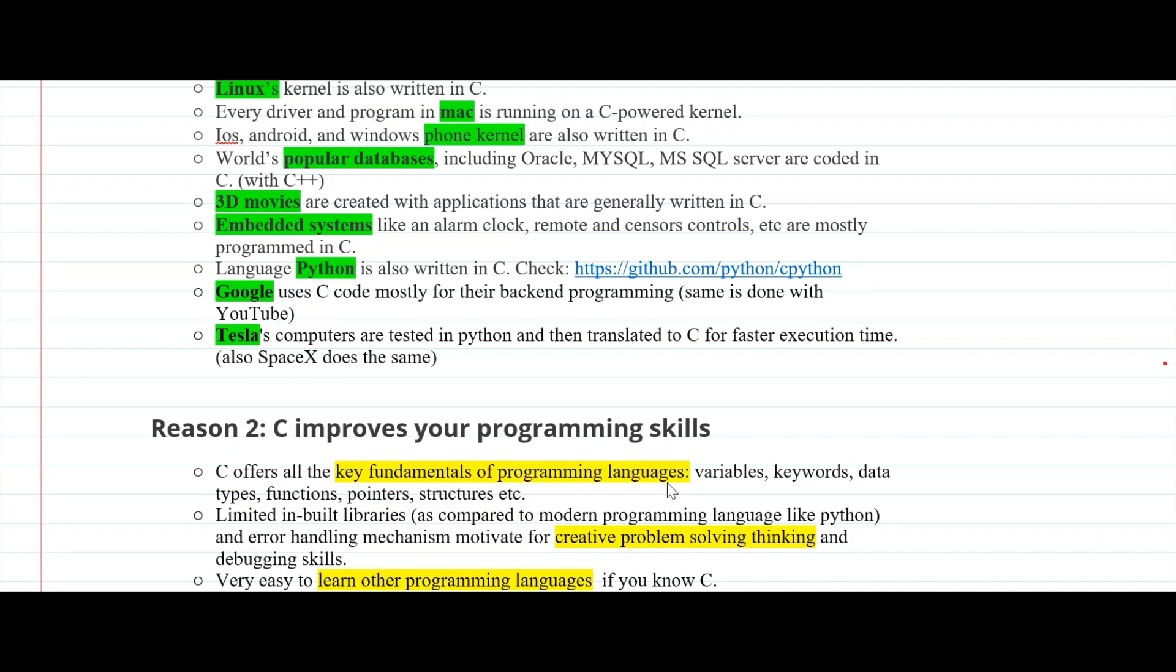Second thing is due to limited inbuilt libraries as compared to modern programming languages like Python. C has a very limited number of inbuilt libraries. But this limitation will help you because you need to think on your own in order to solve the underlying problem, and this will trigger creative problem solving thinking in you, and in the long run this will be very helpful.